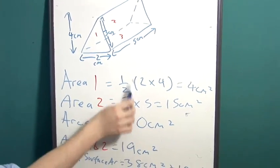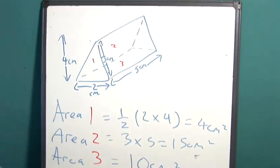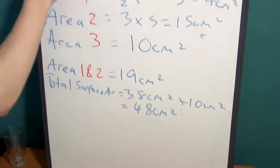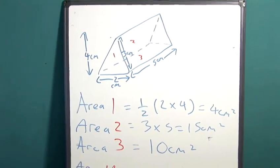We then add the first two together, because there are two of those surfaces on the prism. Multiply this by two, that gives us the total surface area for those four faces.